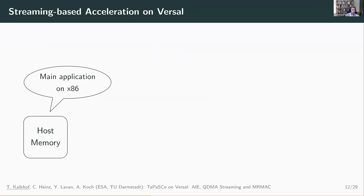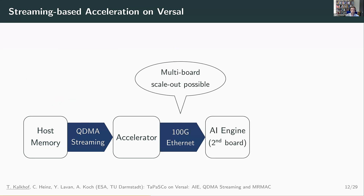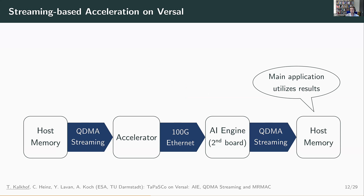Our vision of an application in a streaming-based setup is that you have a main application running on your host CPU placing data in host memory. Then you use the QDMA streaming feature to stream data from host memory directly into your accelerator — no intermediate copies to any other memory. You may require a second FPGA board, so you can stream intermediate results over Ethernet to the next board, where you may use the AI engines or not. Your final results are then streamed back to host memory for your main application to utilize.